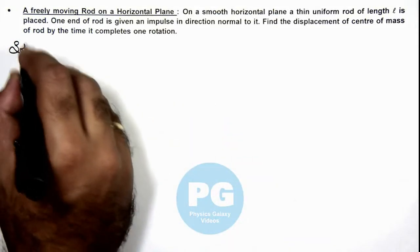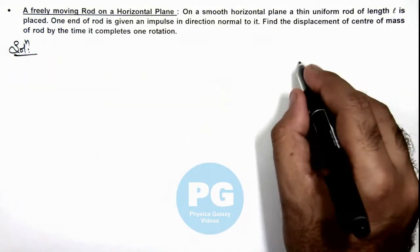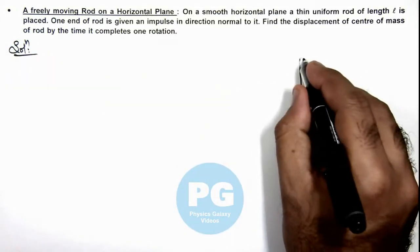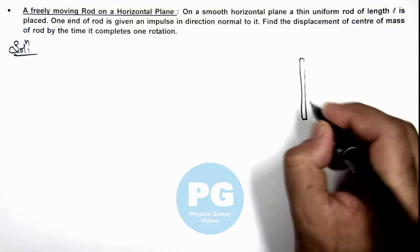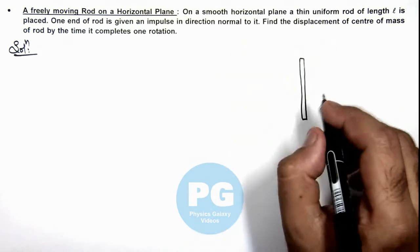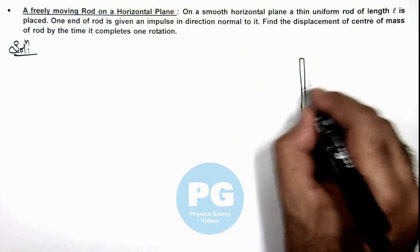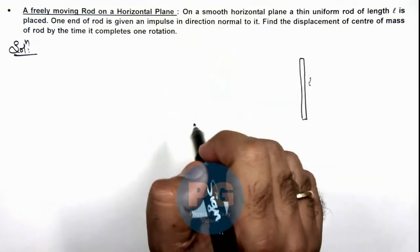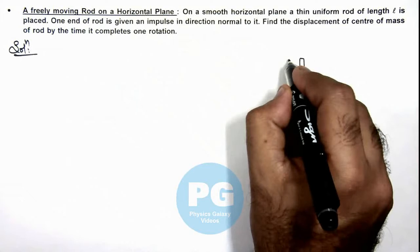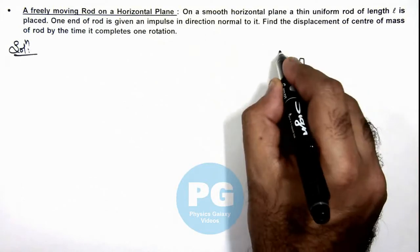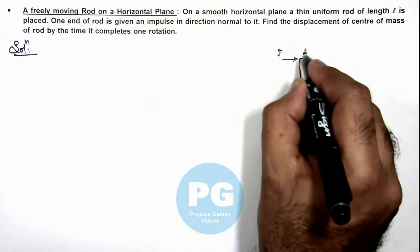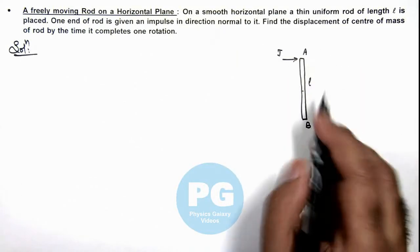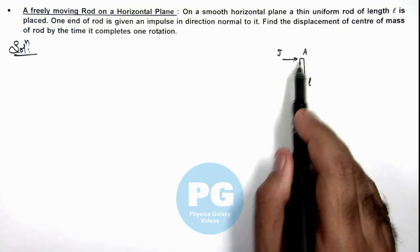Here, in solution, we can draw the figure. A rod is placed on a smooth horizontal plane and it is of length l. One end of the rod is given an impulse in direction normal to it. So if an impulse j is imparted onto one end, say the rod is AB, and at A an impulse j is imparted.